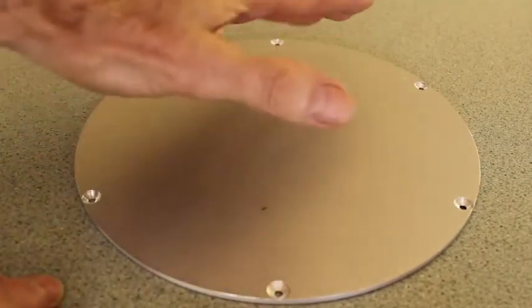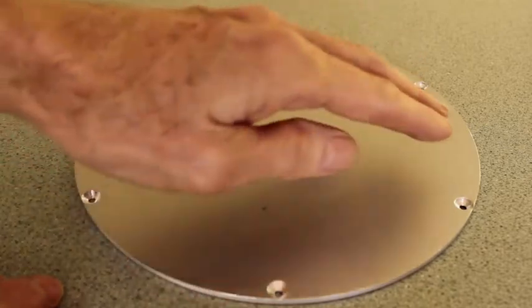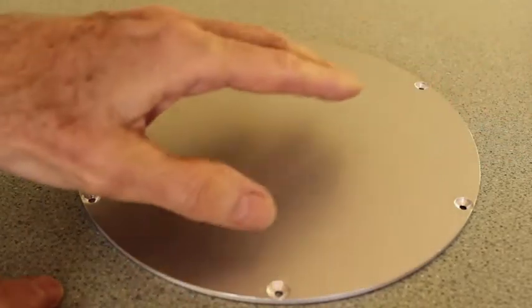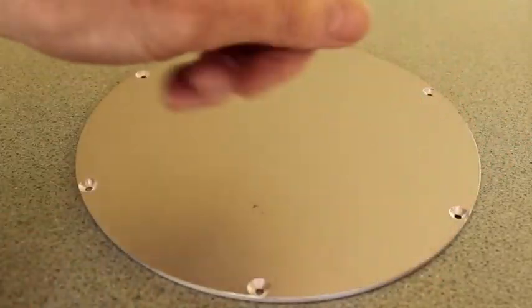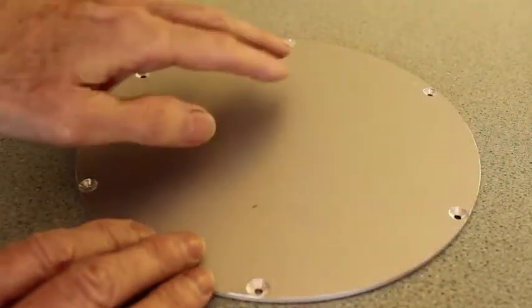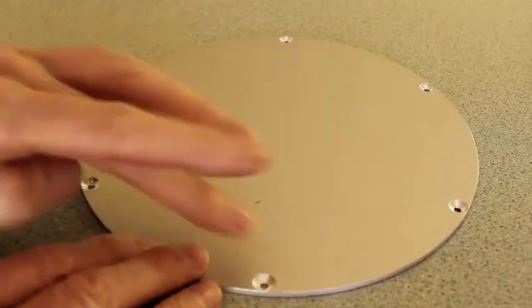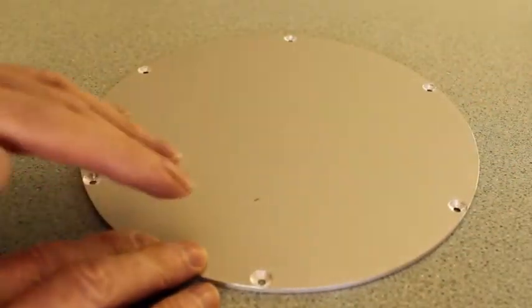You need to remove burrs whenever you can, because if you don't, later on they'll be sitting there waiting to get you. You'll be removing something and you'll slit your finger and there'll be blood everywhere. So just get yourself a little warding file, run around, and it's done.